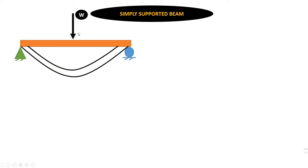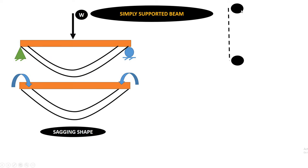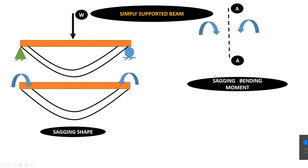If I apply a downward load, the beam will deflect downwards. For the simply supported beam, if the deflection is downwards, the moment generated is clockwise on the left and anticlockwise on the right, giving a sagging shape. If we take a section with clockwise moment on the left side and anticlockwise moment on the right side, the type of moment is sagging bending moment.